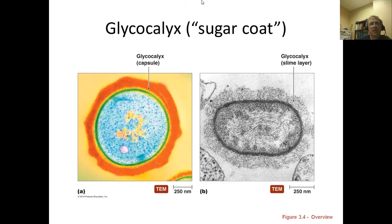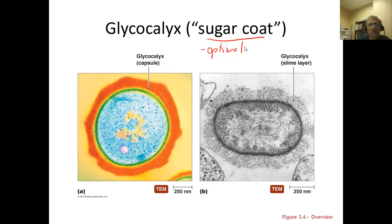The first structure we're going to talk about is the glycocalyx, which means literally 'sugar coat.' It's an optional structure found on some prokaryotic cells but not others. The glycocalyx comes in two different forms, differentiated by how dense the structure is. A glycocalyx that is very tight and firm around the surface of the prokaryotic cell is known as a capsule. A glycocalyx that is somewhat more loose and less tightly associated with the surface is known as a slime layer.